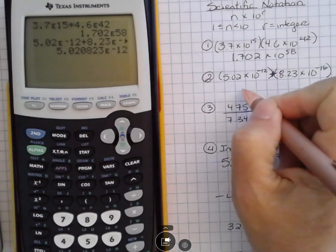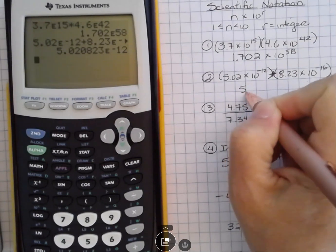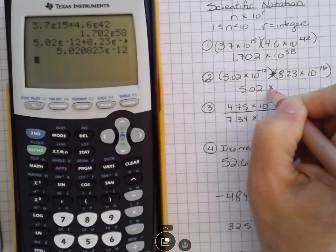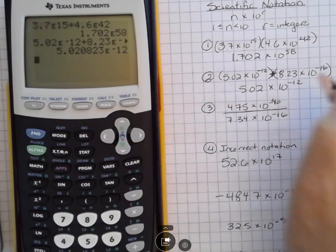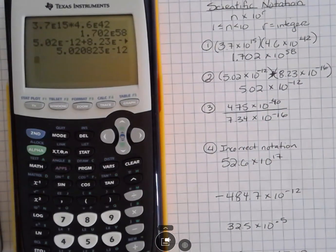I'm going to just go out two places, because that was what we have for significant digits, so I think that's okay, and then times 10 to the negative 12. So remember, the E negative 12 means times 10 to the negative 12.